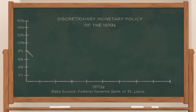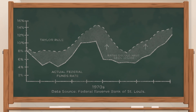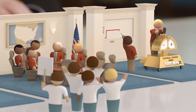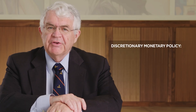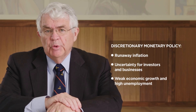By mapping out the Taylor Rule in modern American history, we can see what happens when the Federal Reserve deviates from a rules-based policy. For example, the 1970s were marked by rapid inflation and high unemployment in part because the Federal Reserve ran a discretionary monetary policy. It kept interest rates too low in an effort to boost the economy, motivated by political pressure and the perception that raising the federal funds rate would have a negative effect on growth. But this discretionary policy had three bad outcomes: runaway inflation, uncertainty for investors, consumers, and businesses, and weak economic growth.